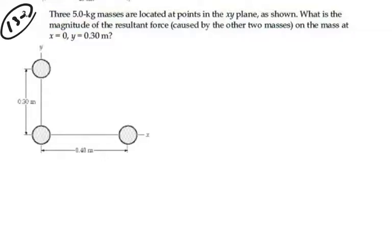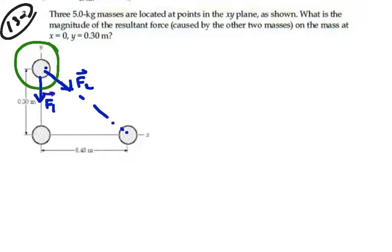Alright, so we are going to focus on mass number 1 right here. We know that there will be a force of attraction, let's call it F1, towards mass number 2, and a force of attraction, F2, towards mass number 3. These forces will be equal and opposite between the two masses involved. We're going to look at each force separately and then add them together according to superposition.